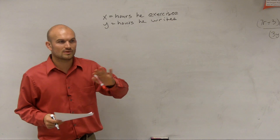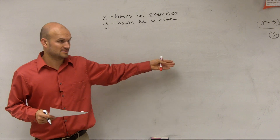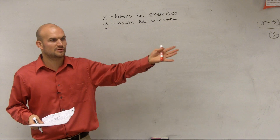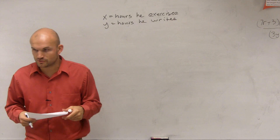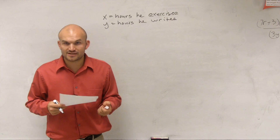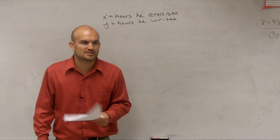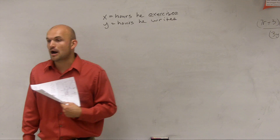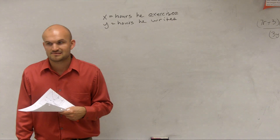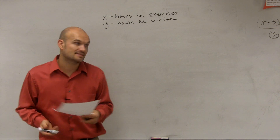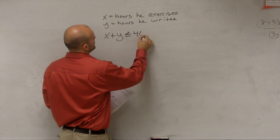One thing to note: we can't have more than two equations when dealing with a system of two variables, but because we're dealing with inequalities this time, it's possible to have more than two inequalities. He has budgeted 40 hours per week, so the total amount of hours he exercises and writes can be equal to or less than 40. So we write: x plus y is less than or equal to 40.